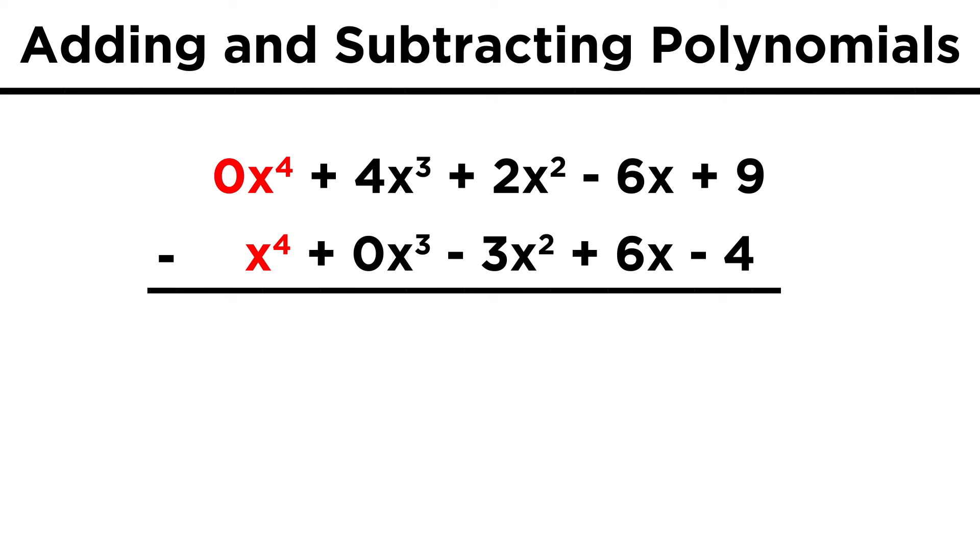Now we are subtracting x to the fourth from zero x to the fourth. That gives negative x to the fourth. Then it's 4x cubed minus zero, so that term stays as it is. Then it's 2x squared minus negative 3x squared. Remember that subtracting a negative number is the same as adding the positive version, so this becomes 2x squared plus 3x squared, or 5x squared. Negative 6x minus 6x is negative 12x, and 9 minus negative 4 is 13. And this is how we subtract one polynomial from another.